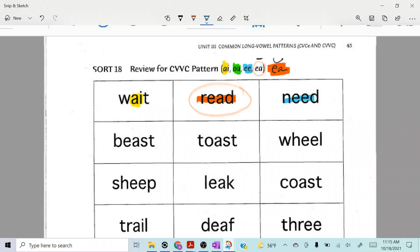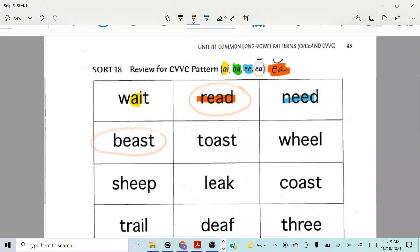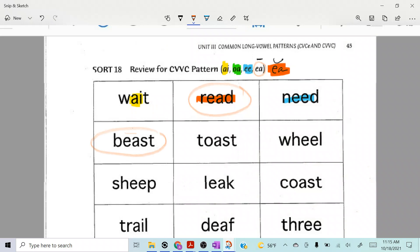How about beast? Jarvie? Beige circle. Yep, because it's—yeah, you're right, because it's ea long. Beast. I hear that long e.